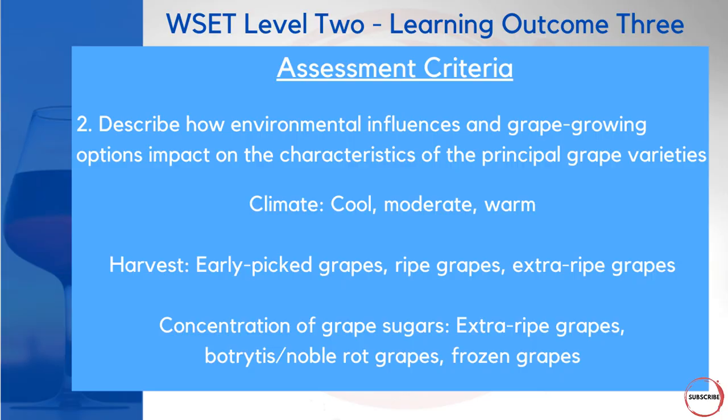Now let's move to assessment criteria number two: describing how environmental influences and grape growing options impact the characteristics of grapes. There's some crossover here — we'll be looking at climate: cool, moderate, warm; how early versus late harvesting compares; and the concentration of grape sugars including extra ripe, noble rot, and frozen grapes. Now we're applying these concepts specifically to the eight principal grape varieties.